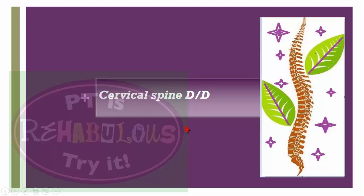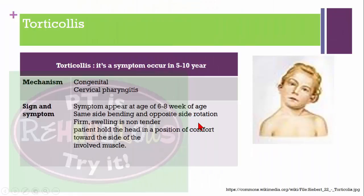Now for cervical spine differential diagnosis, we have conditions like cervical stenosis, cervical spondylosis, and torticollis. Torticollis is a symptom occurring in children aged five to ten years. The mechanism of injury may be congenital or cervical pharyngitis. The patient presents with same-side flexion and head rotated to the opposite side. Signs and symptoms appear at six to eight weeks — same-side bending and opposite-side rotation, non-tender swelling or firmness, and the patient holds the head in a position of comfort.